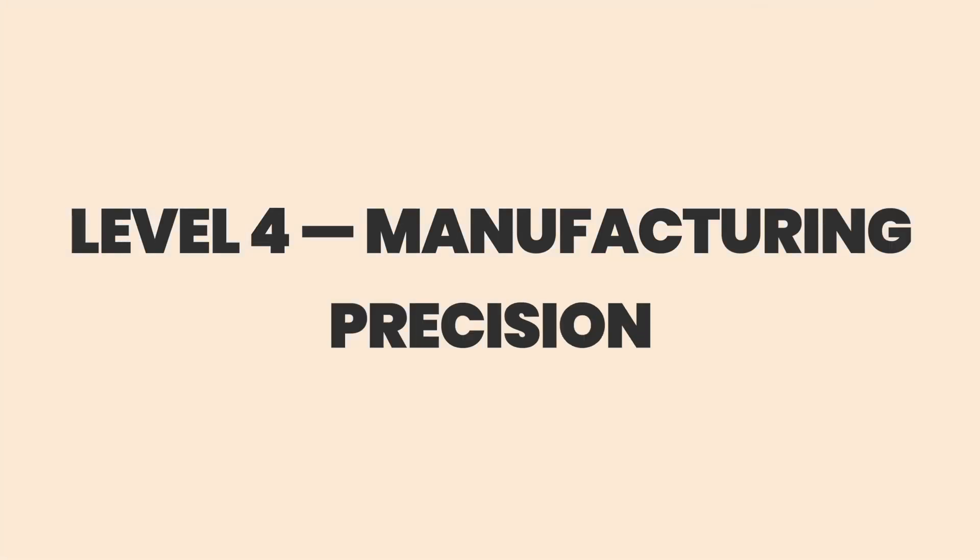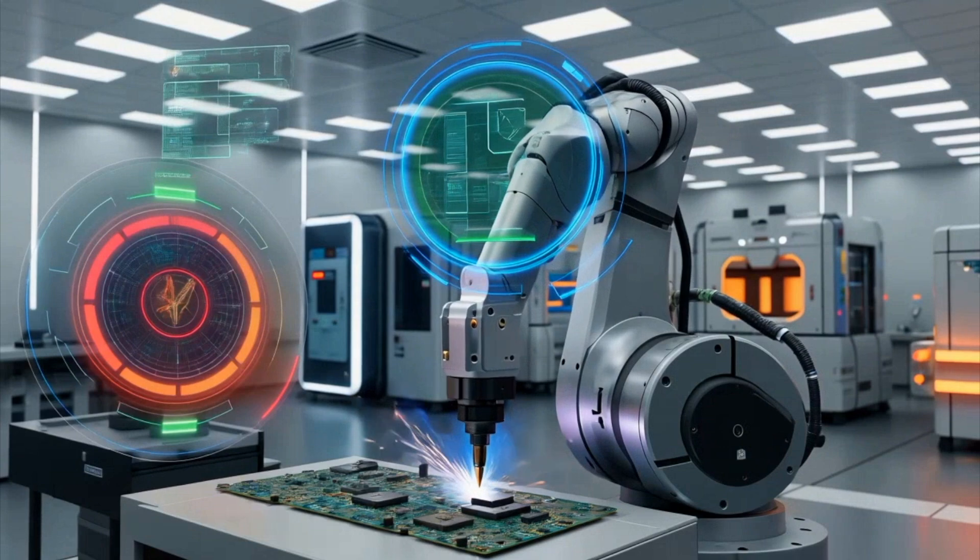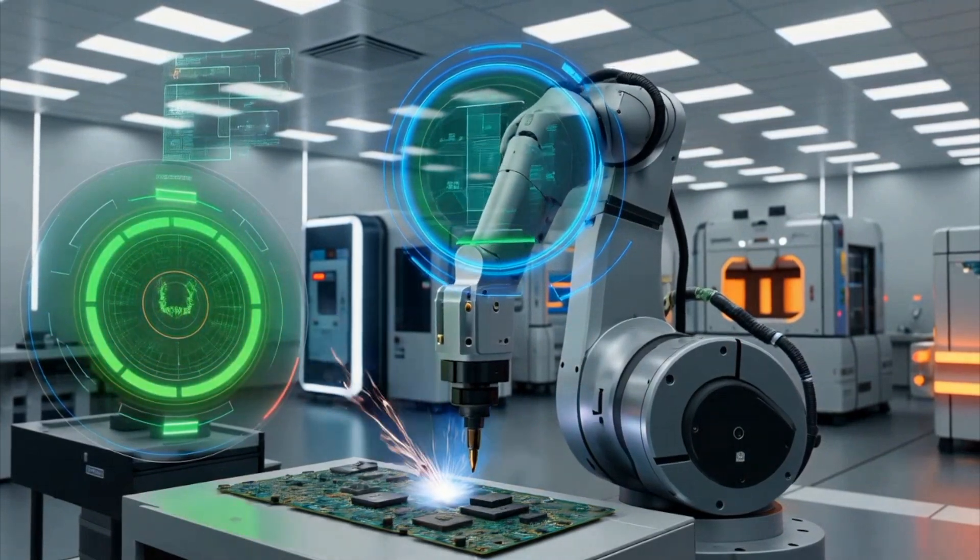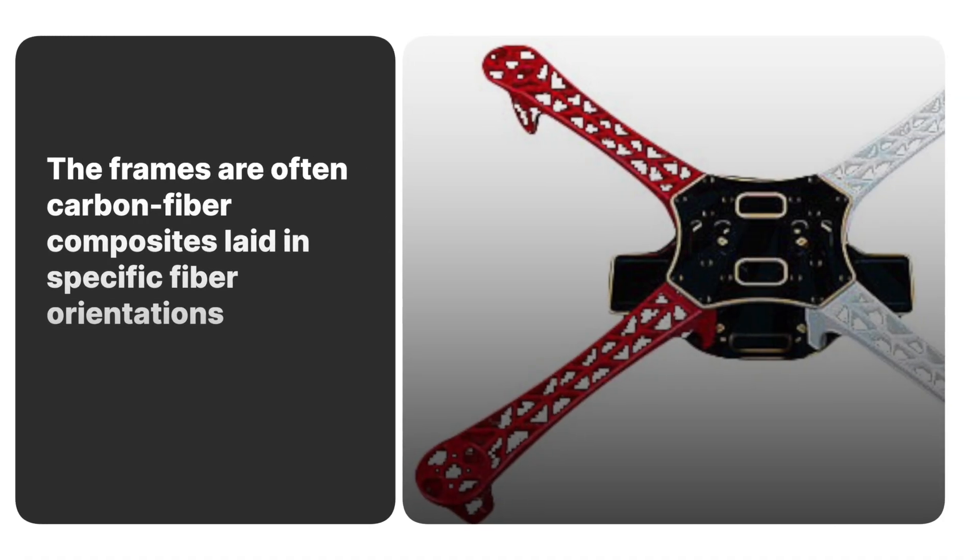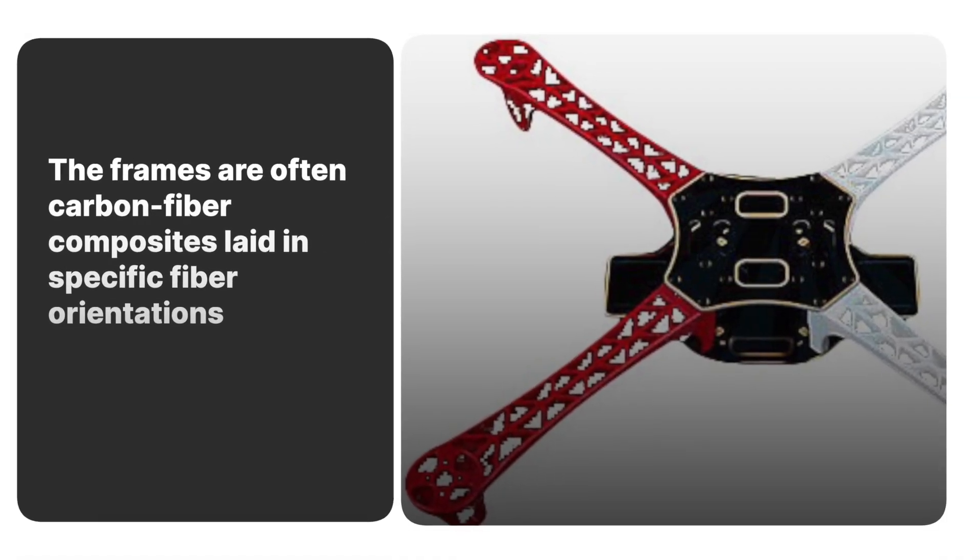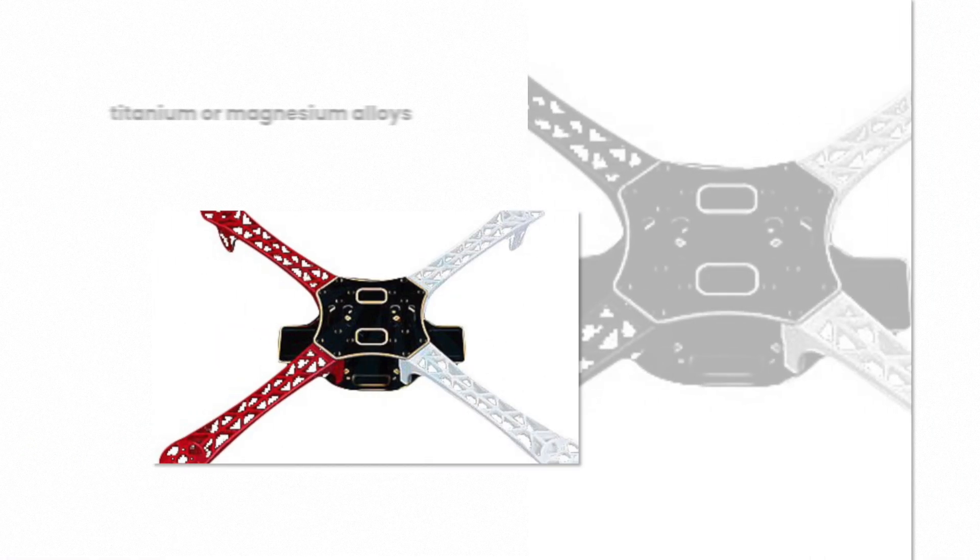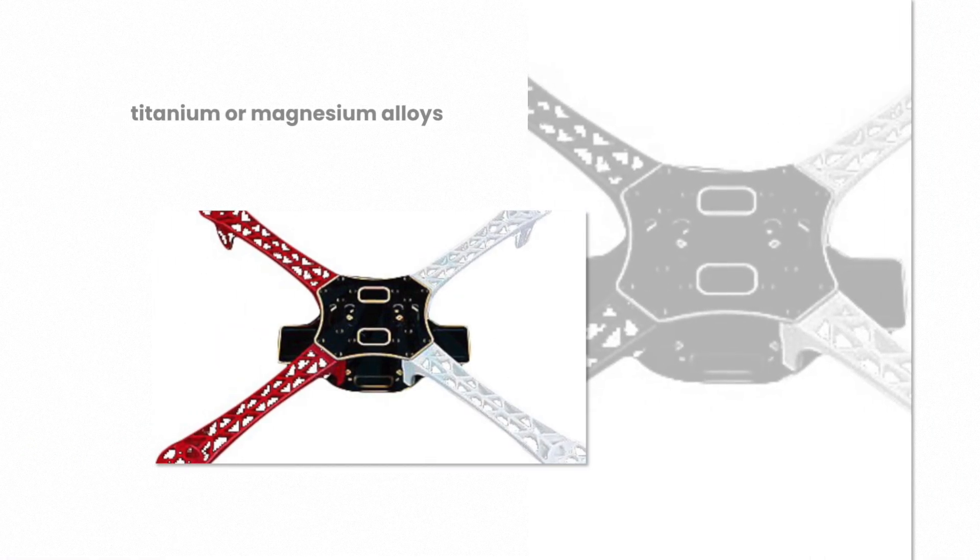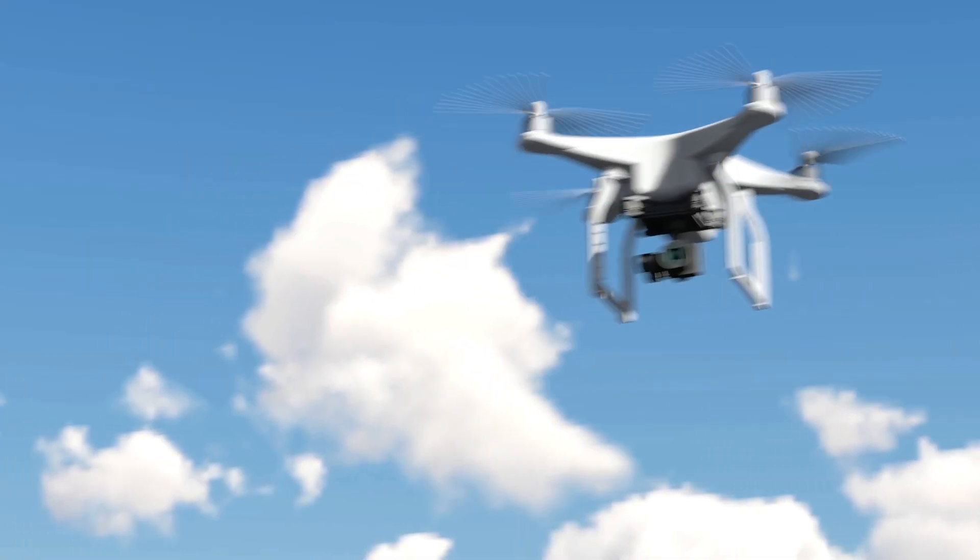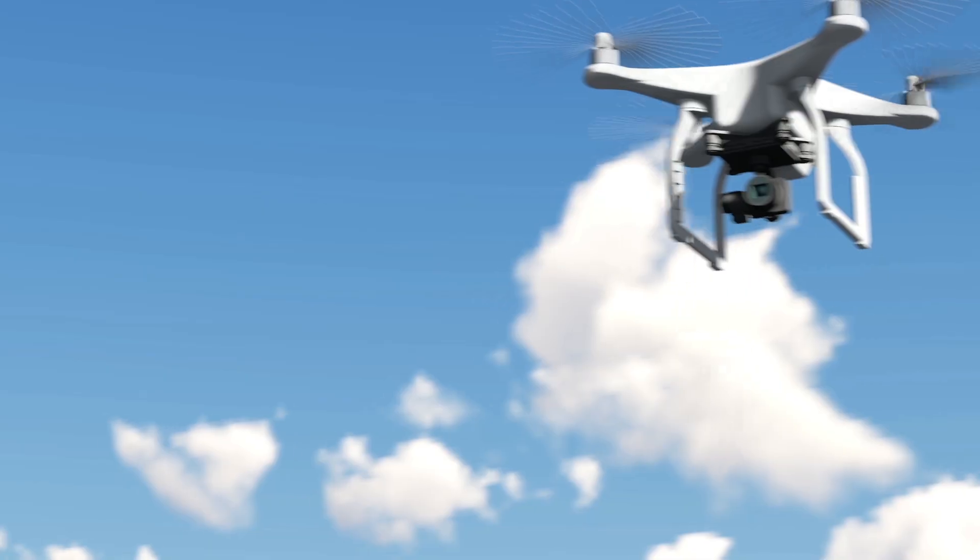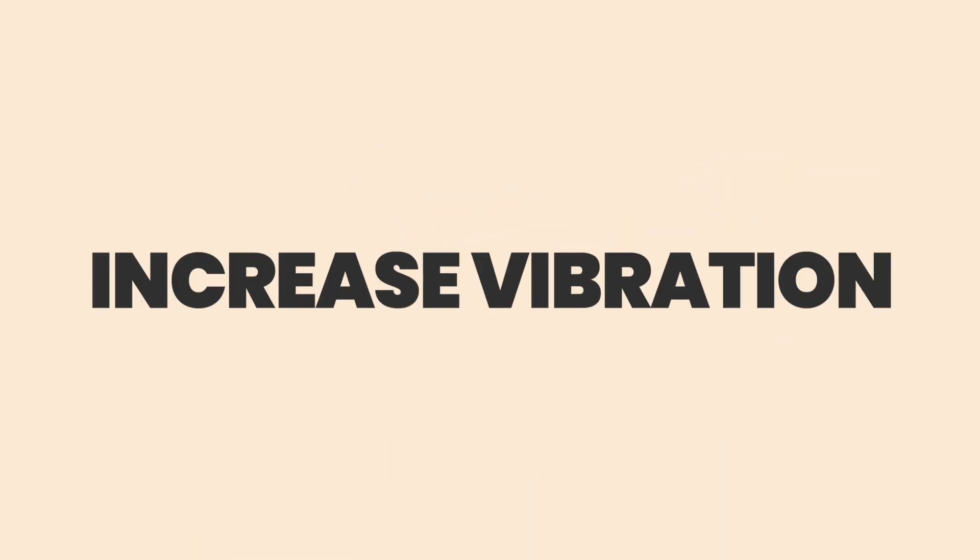Level 4. Manufacturing precision. Look inside a commercial drone factory and you'll find clean rooms, autoclaves, pick-and-place machines, and optical inspection rigs. Not a garage. The frames are often carbon fiber composites laid in specific fiber orientations and cured in autoclaves to achieve the highest strength-to-weight ratios. High-end frames sometimes use titanium or magnesium alloys in critical load paths. Propellers are injection molded or CNC machined to tolerances where a fraction of a gram difference can upset balance and increase vibration.